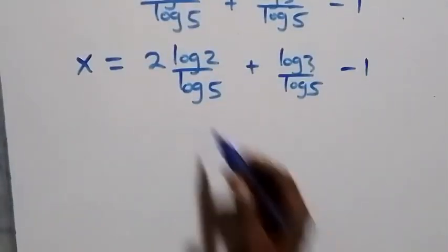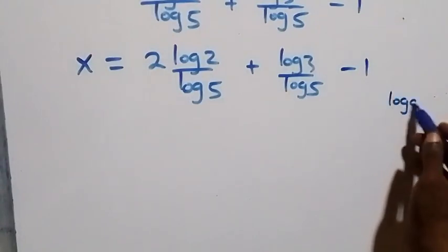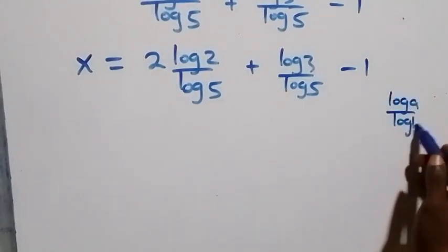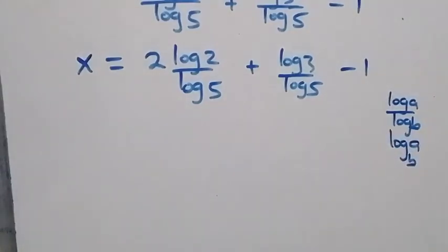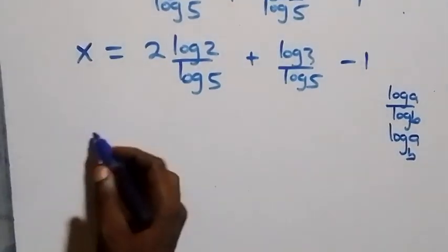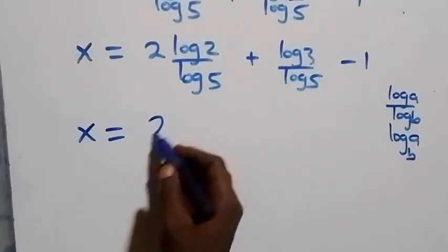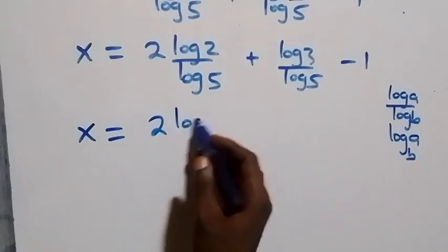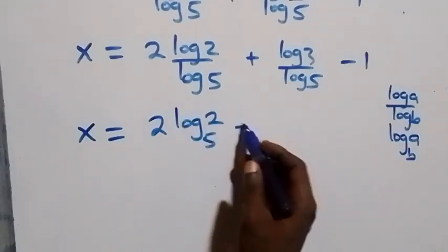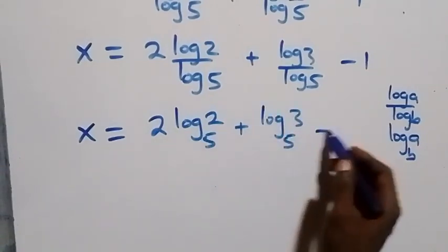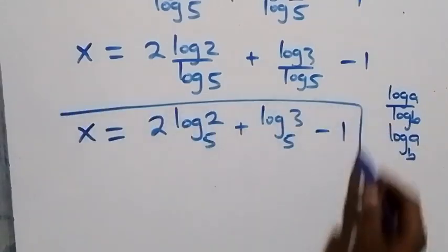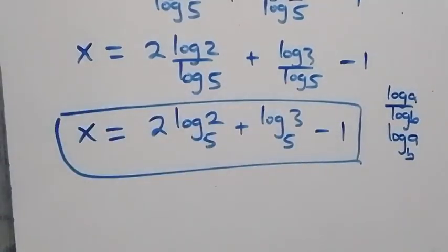Applying the change of base formula — log a over log b can be written as log a to base b — what we have now becomes x equals 2 log₅2 plus log₅3 minus 1. So the value of x in this problem is 2 log₅2 plus log₅3 minus 1.